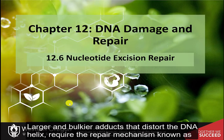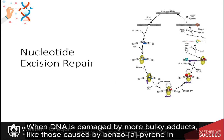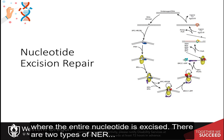Larger and bulkier adducts that distort the DNA helix require the repair mechanism known as nucleotide excision repair. When DNA is damaged by more bulky adducts, like those caused by benzo[a]pyrene in cigarette smoke, they are typically repaired by the process of nucleotide excision repair, where the entire nucleotide is excised.